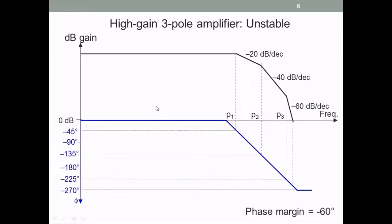Let's look at a Bode plot of a fictitious high gain amplifier that has three poles. The magnitude plot is flat for low frequencies, then there is p1, p2, and p3, and the gain falls at minus 20, minus 40, and minus 60 dB per decade. All three poles are above the unity gain frequency. In the phase plot, at p1 the phase is minus 45 degrees, at p2 minus 135, at p3 minus 225, and at the unity gain frequency somewhere between minus 225 and minus 270. Adding 180, the phase margin is of the order of minus 60 degrees.